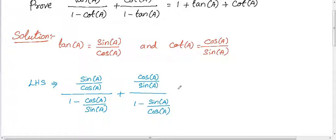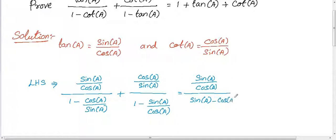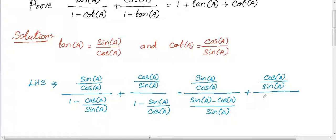If we simplify this, for the first term write down the numerator as it is and take LCD of the denominator. So we get sin a minus cos a divided by cos a, whole divided by sin a. Plus, similarly, write down the numerator as it is, which is cos a divided by sin a, whole divided by cos a minus sin a divided by cos a.